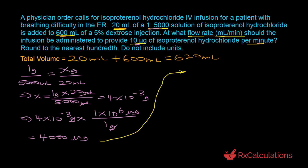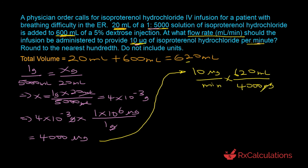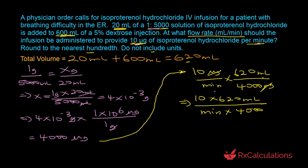Using dimensional analysis, start with the mass rate of 10 micrograms per minute, multiply by the volume of 620 mL containing 4000 micrograms — micrograms cancel — leaving milliliters per minute. Calculating: 10 × 620 ÷ (4000) = 1.55 milliliters per minute. Rounded to the nearest hundredth, the answer is 1.55. I hope you found this video tutorial useful — if you did, be sure to like it and share it, and leave any questions in the comments.